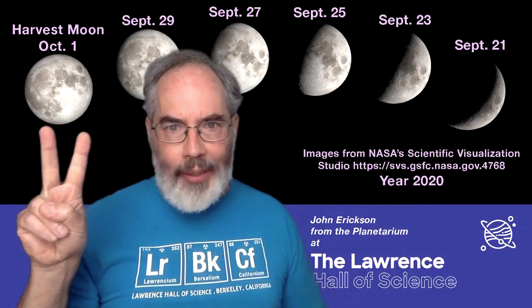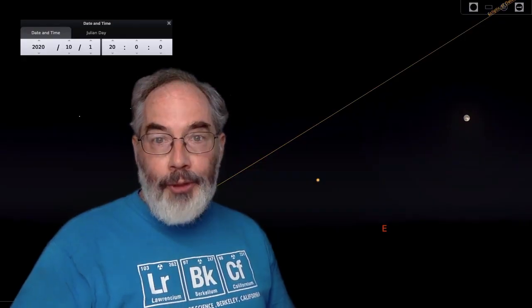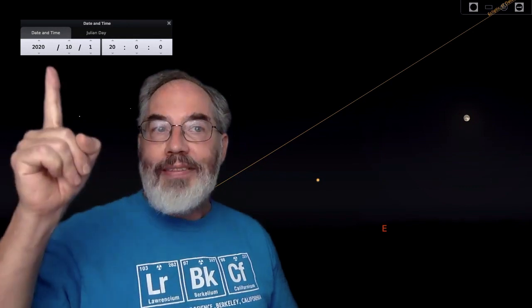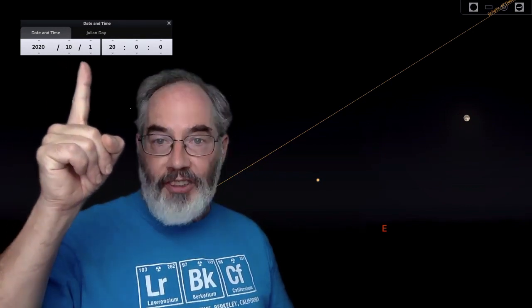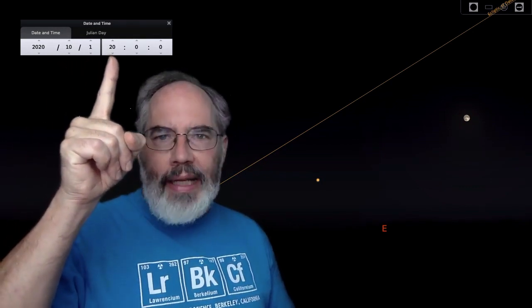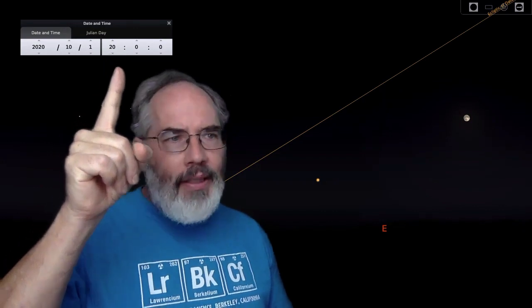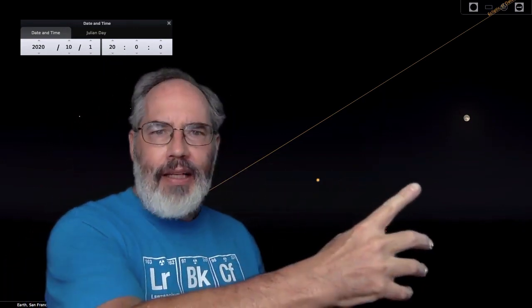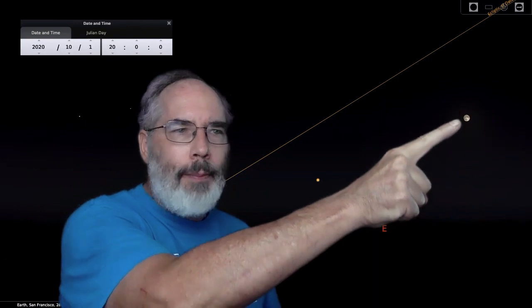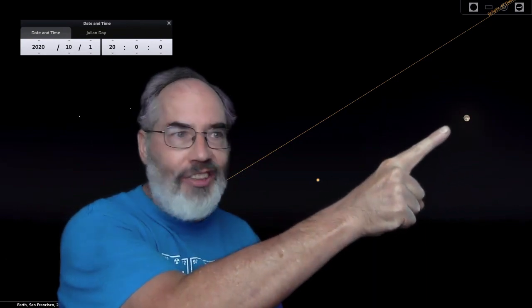This year the harvest moon has two things special about it. The computer program Stellarium is showing us the sky for October 1st, and 20 here means 8 p.m., so it's a little bit after the sun has gone down and the moon has come up a little bit. There's our harvest moon.